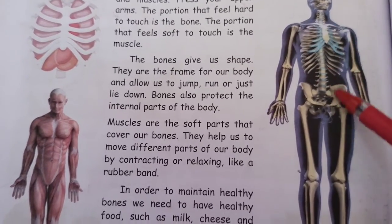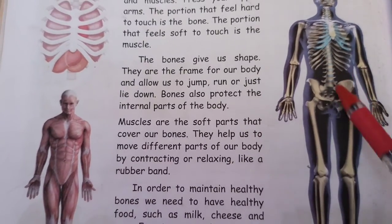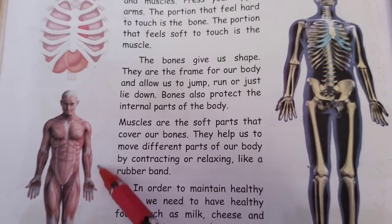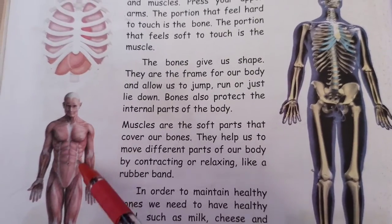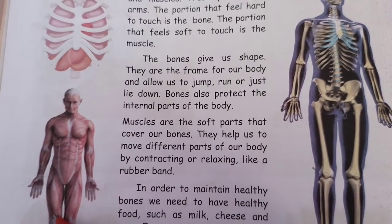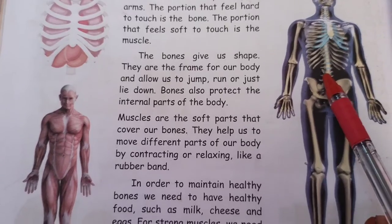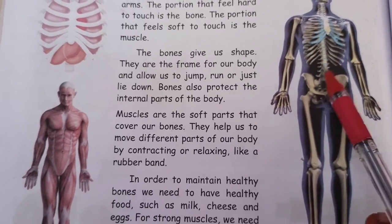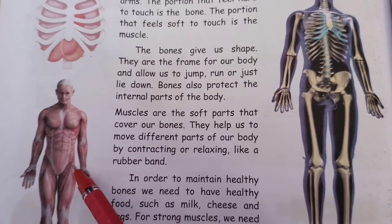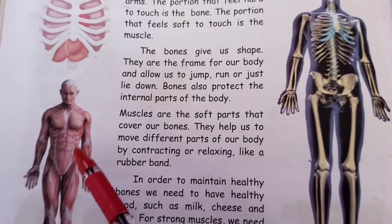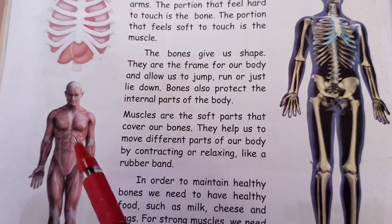All these bones are covered by muscles. Muscles are the very soft parts — the area that feels soft above the bones is called a muscle. The muscles are covered by the skin. We have more than 600 muscles in our body.